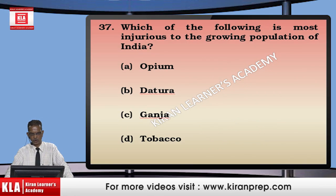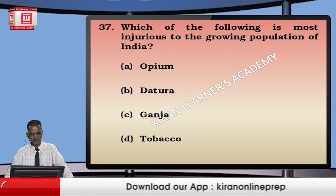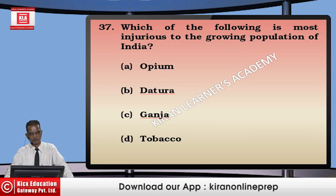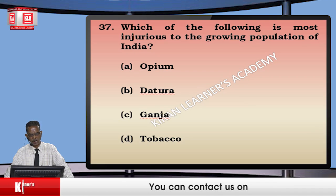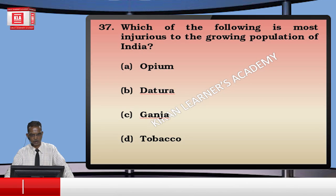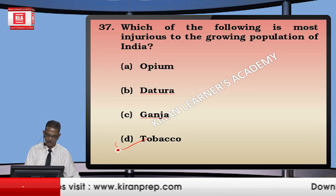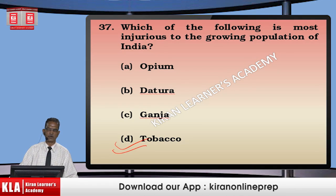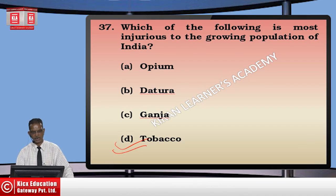Which of the following is most injurious to the growing population of India? While all four — opium, datura, ganja, and tobacco — are harmful, datura also contains useful alkaloids. Looking at the percentage of the population using these substances, tobacco is the greatest threat because it is consumed in different forms — smoked or chewed — by large numbers of people. So the correct option is tobacco.